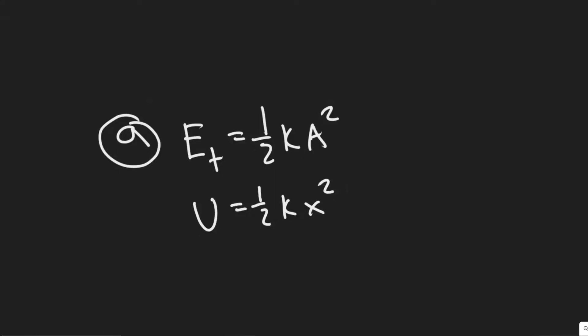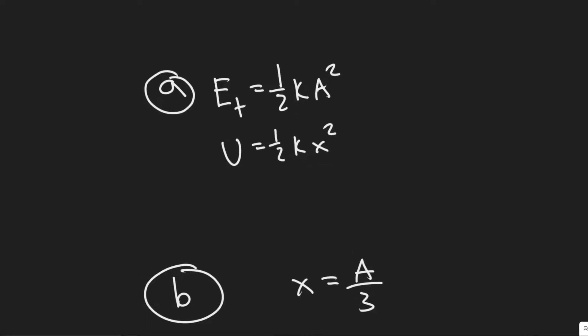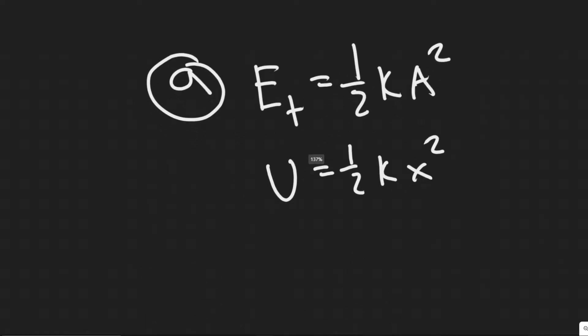In this problem we're told: at what displacement of a simple harmonic oscillator is the energy half kinetic and half potential? And part B: what fraction of the total energy of a simple harmonic oscillator is kinetic and what fraction potential when the displacement is one-third the amplitude? So we have two parts here. Let's go ahead and start with the first part.